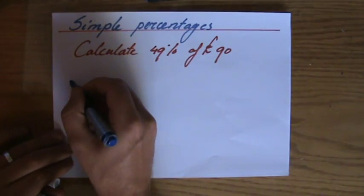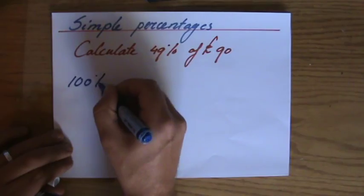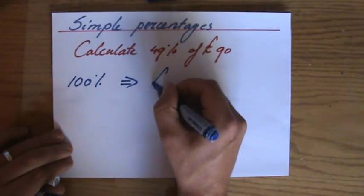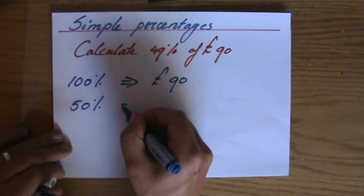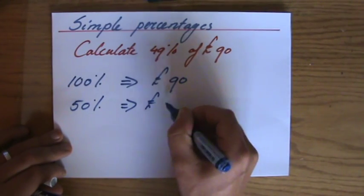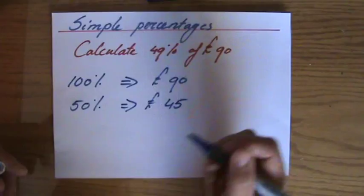For instance, I could say, well, what if 100% is 90 pounds? I'm going to find out what 50% is. And that indeed is 45 pounds.